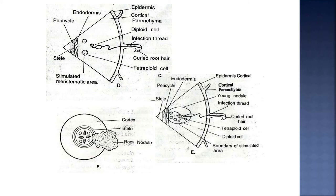In this slide you can also see the pericycle, endodermis, stele, and stimulated meristematic area. Then epidermis, cortical parenchyma, diploid cells, and the infection thread. Curved root hair, tetraploid cells, endodermis, epidermis, cortical parenchyma, young nodule, and infection thread are visible. Then tetraploid cells, diploid cells, and the boundary of the stimulated area — all present within endodermis, pericycle, and stele.